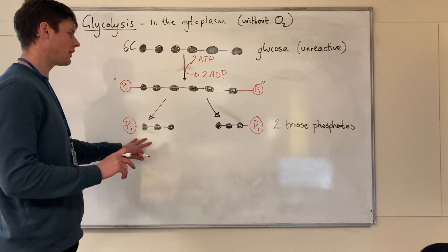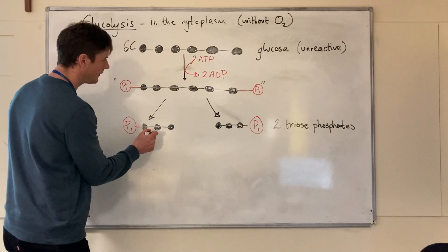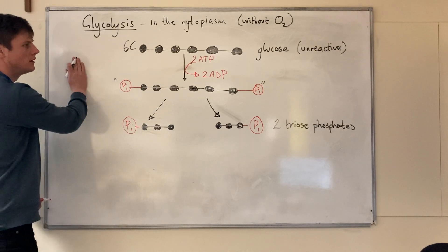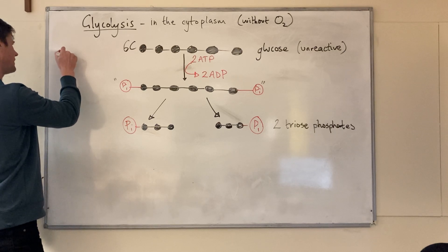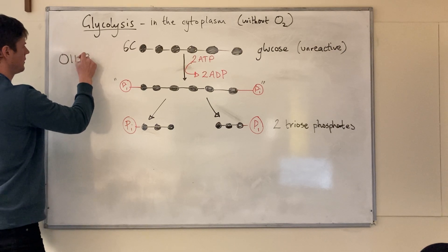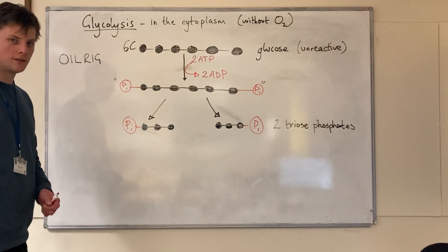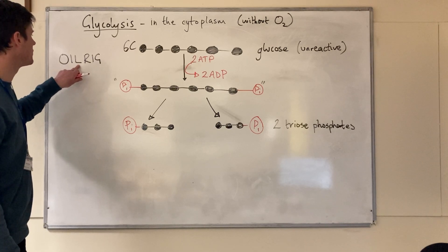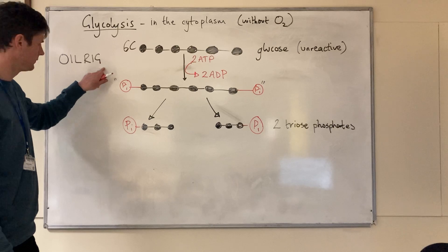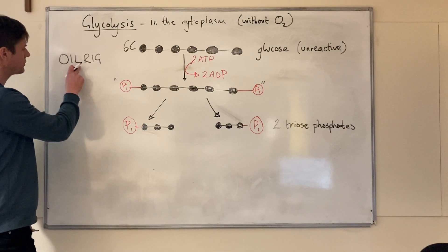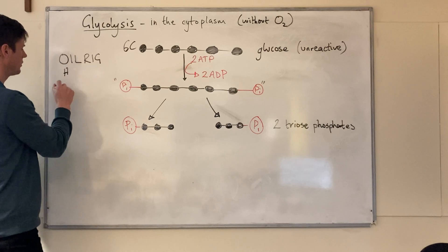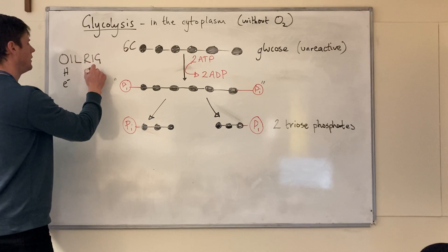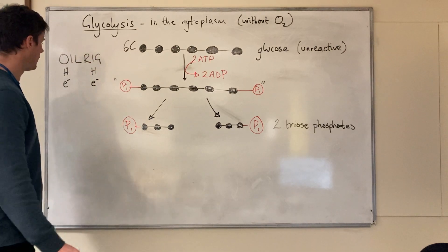Triose phosphate then undergoes oxidation. Now if you remember from chemistry, this will be familiar. The rest of you might need to remember back to GCSE. You might remember the helpful mnemonic OIL RIG: oxidation is loss, reduction is gain. What we mean by that is oxidation is the loss of hydrogen or electrons, and reduction is the gain of hydrogen or electrons.